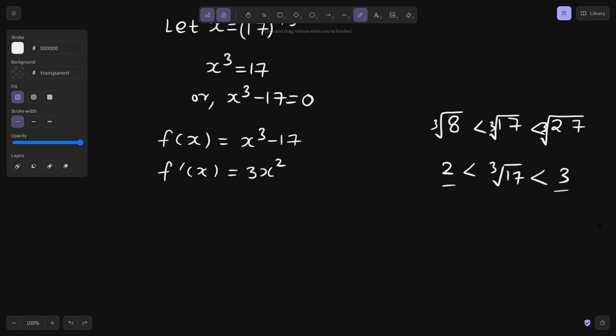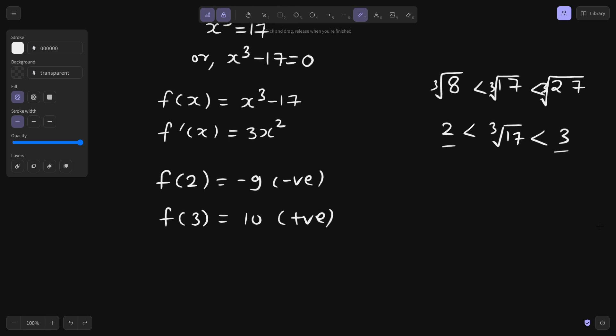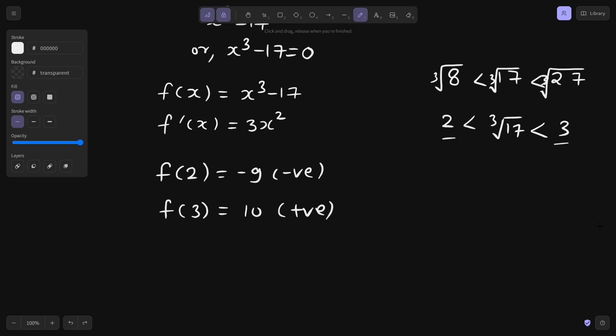The other way to check this is, let's check the value of the function at 2. If you check it will be simply 8 minus 17 which is minus 9 which is negative. If you check the value at 3, this will be 27 minus 17 which is 10 which is positive. So let's pick our x naught value in between it, this two values that is 2.5.